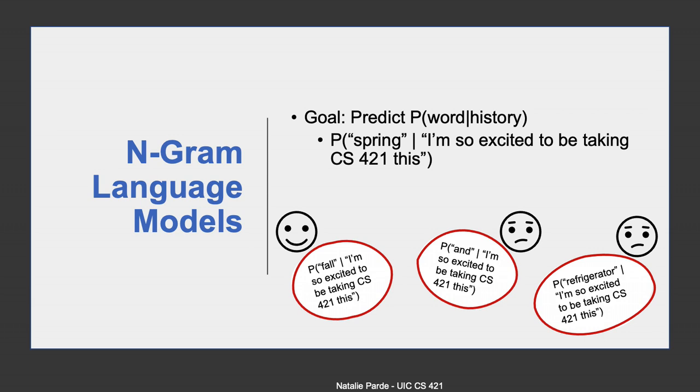N-gram language models are language models built upon this idea. Basically, you want to predict the probability of a word occurring given its history. If you do it right, you should predict higher probabilities for things like the word fall following I'm so excited to be taking CS 421 this, and lower probabilities for things like the word refrigerator following that same sequence.